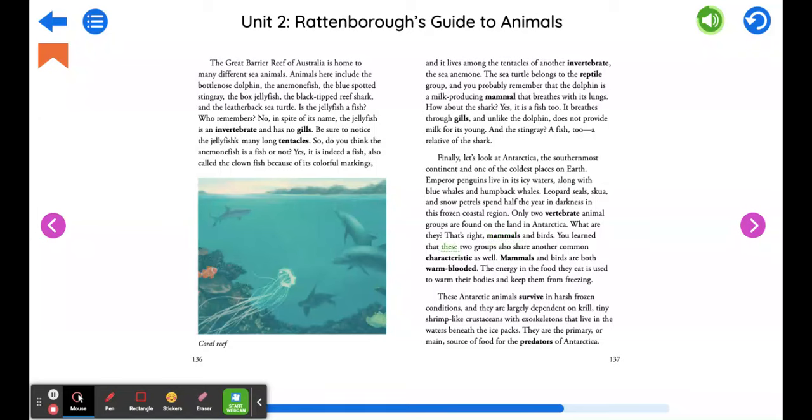You learn that these two groups also share another common characteristic as well. Mammals and birds are both warm-blooded. The energy in the food they eat is used to warm their bodies and keep them from freezing. These Antarctic animals survive in harsh frozen conditions. And they are largely dependent on krill, tiny shrimp-like crustaceans with exoskeletons that live in the waters beneath the ice packs.